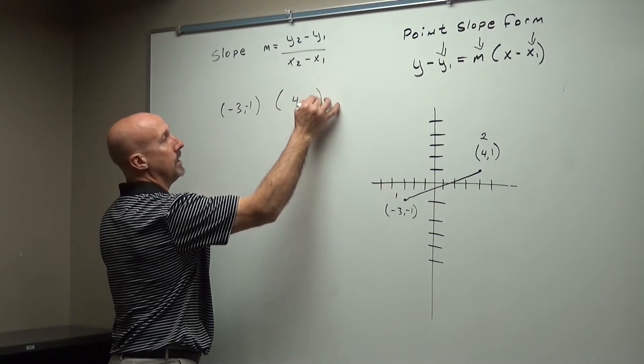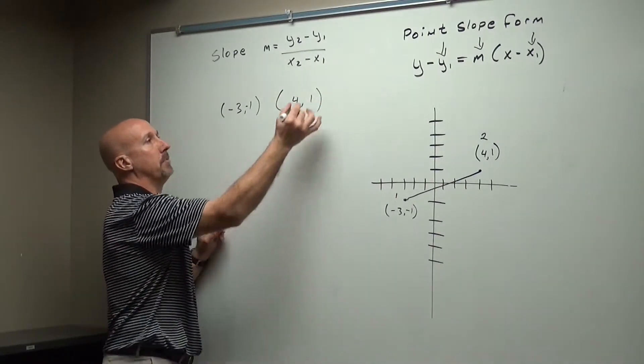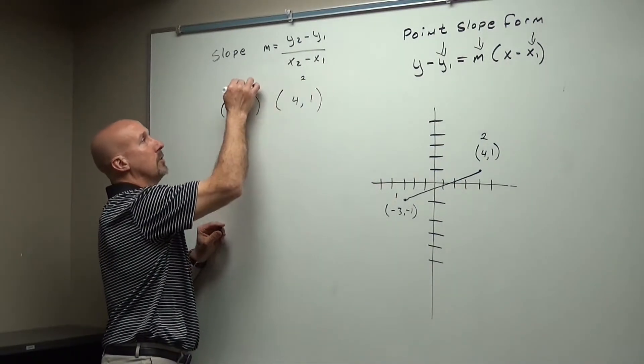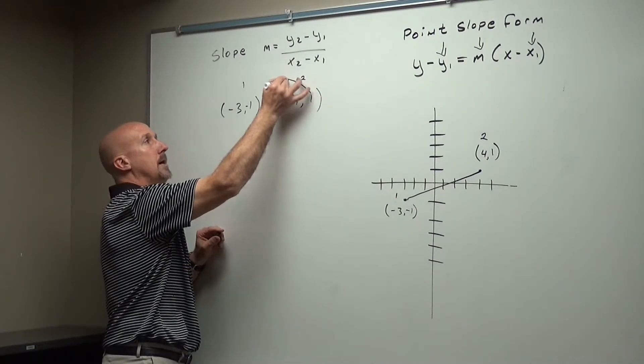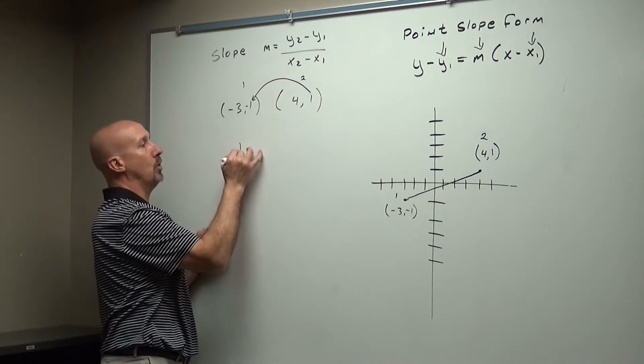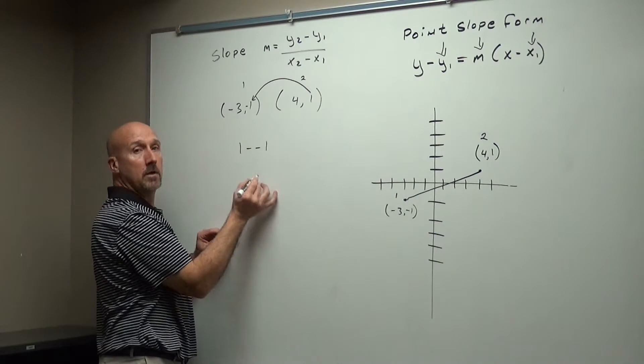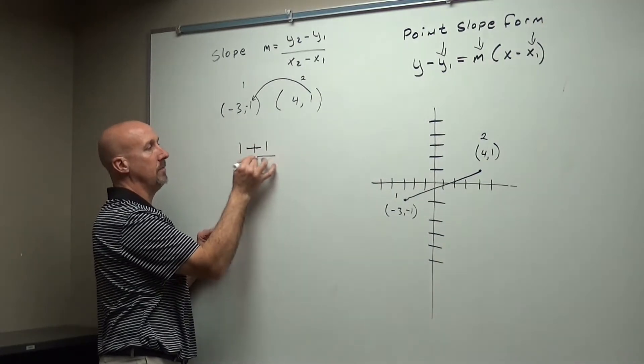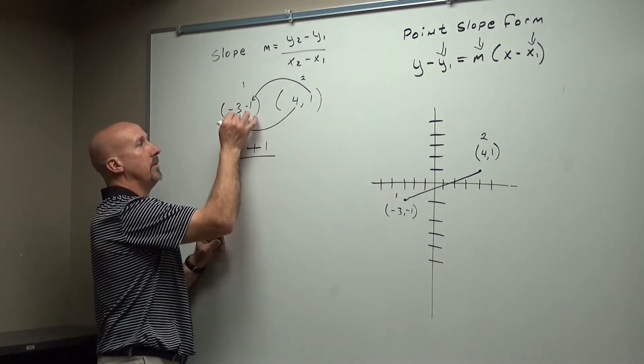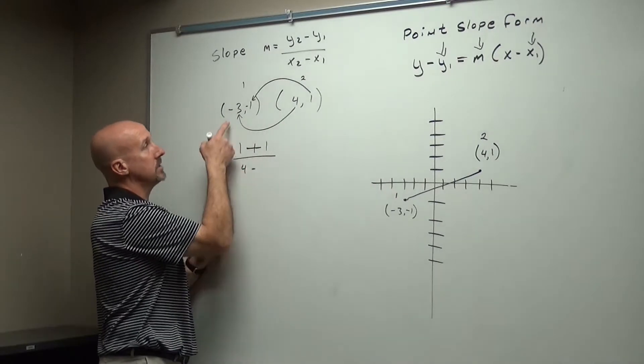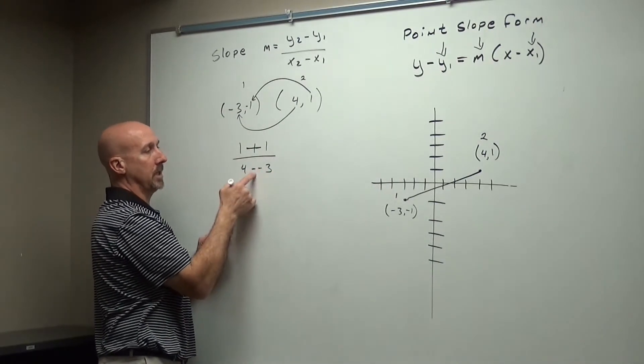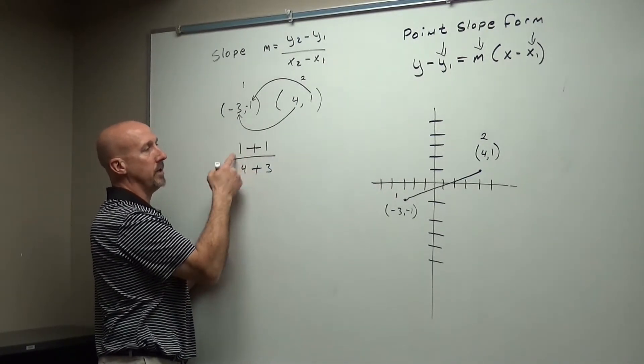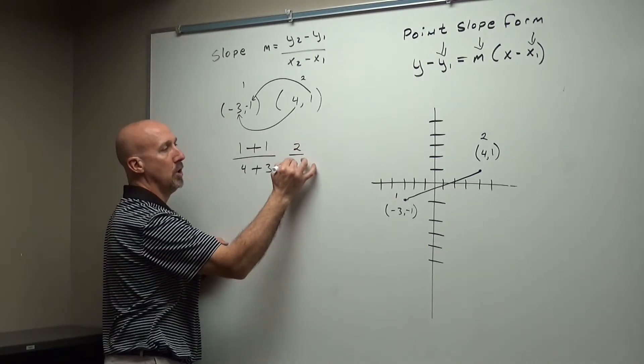and I'm going to find slope. So remember, this is my second group, this is my first group, it's y2 minus y1, so 1 minus negative 1. Obviously this means plus now, over 4 minus negative 3. Again, two negatives give me a positive. So now I do my math. This is 2 over 7.